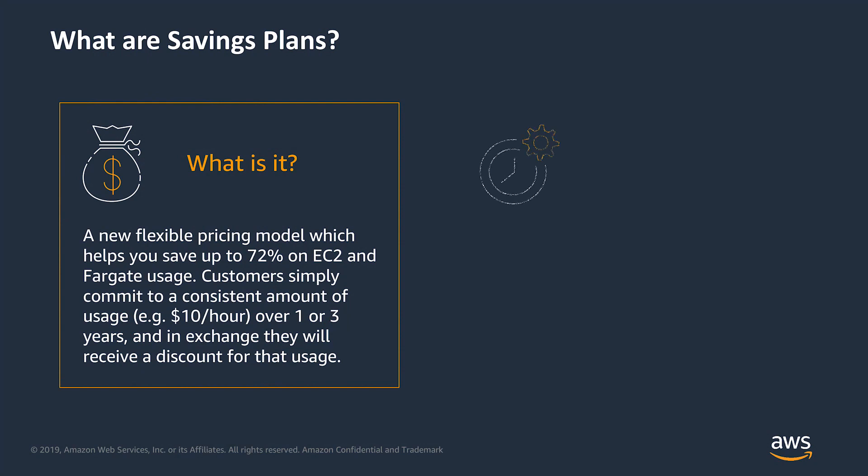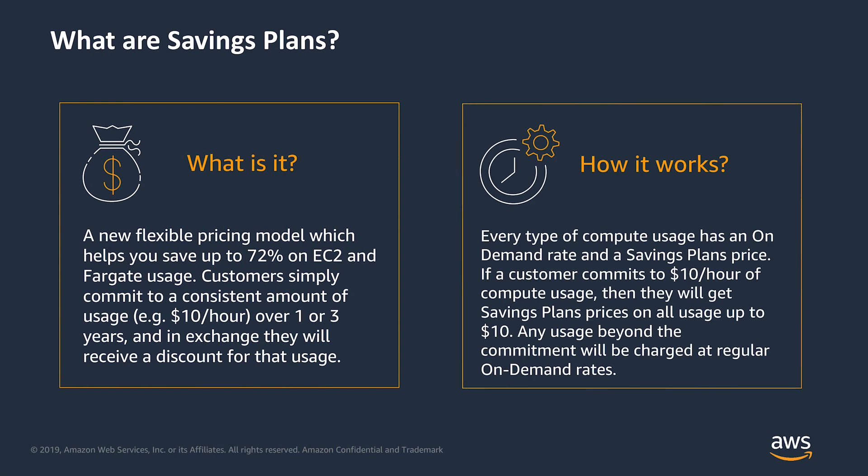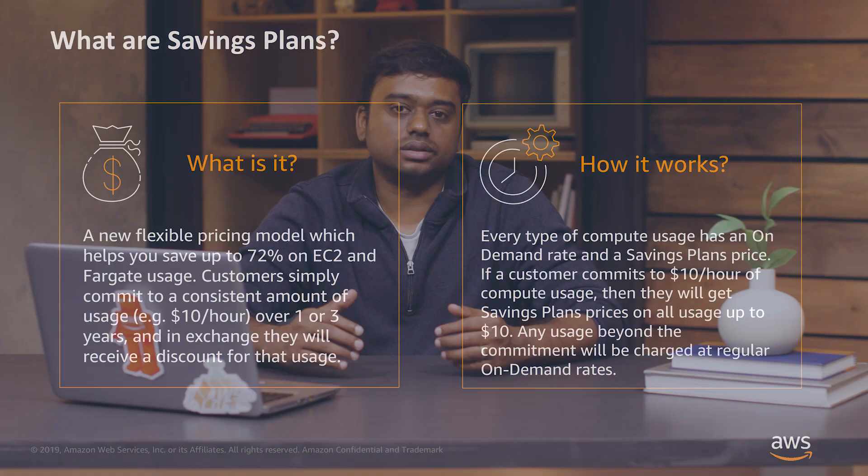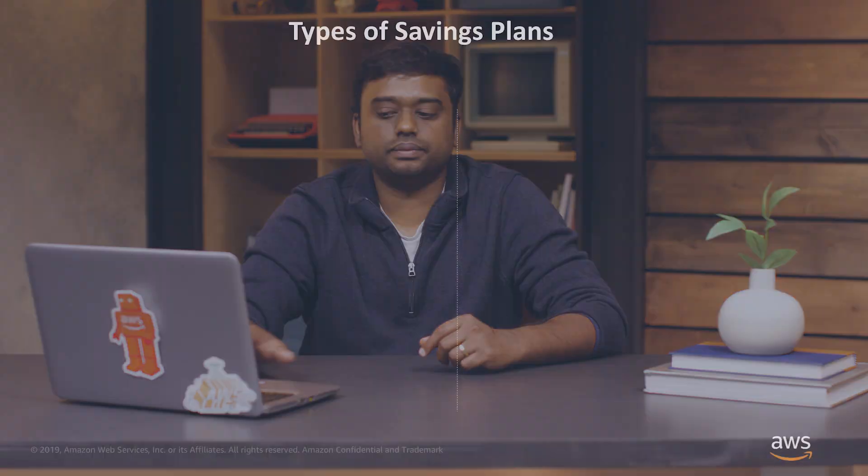So how do they work? Let's say you commit to $10 of compute usage an hour. You will then get the discounted Savings Plan price on all your usage up to $10, and any usage beyond the commitment will be charged at the regular on-demand rates.